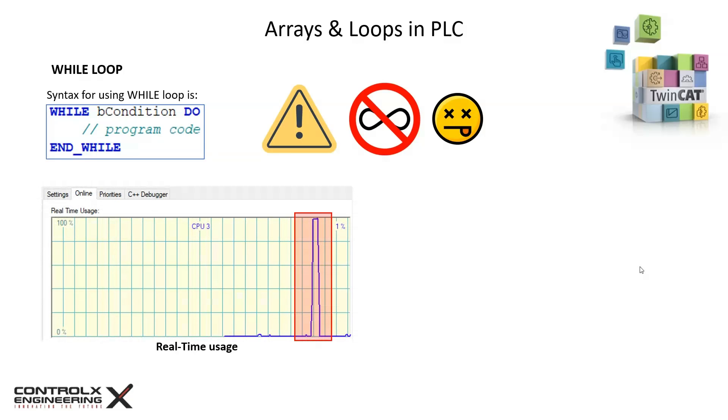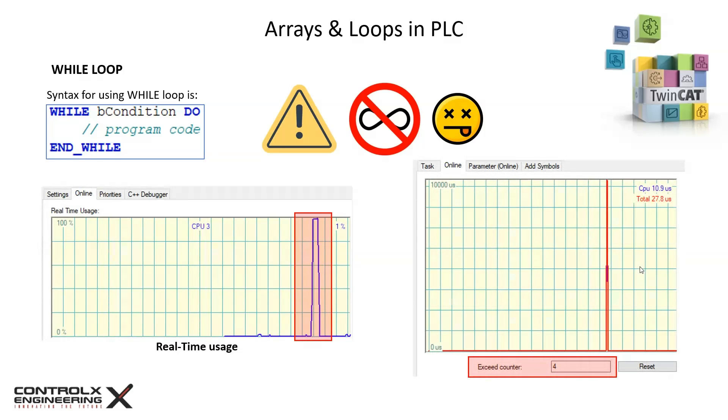To demonstrate, I tried to multiply repeated instructions inside my while loop, which caused a spike in real-time usage as you can see, and also the execution time of the loop exceeded the PLC cycle time, which can be seen from the exceed counter. You don't want this in your PLC execution.